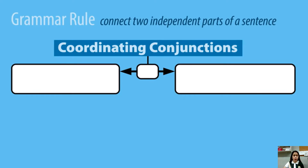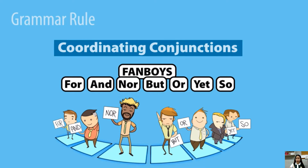We have grammar rules in using coordinating conjunctions. Coordinating conjunctions connect two independent parts of a sentence. Clauses of equal value are called independent clauses, and they can stand on their own as separate sentences. Are you familiar with FANBOYS? We discussed FANBOYS during our live discussion last time. FANBOYS are coordinating conjunctions: for, and, nor, but, or, yet, and so.